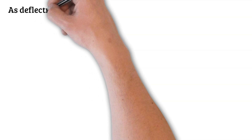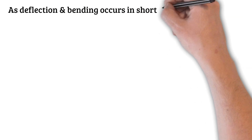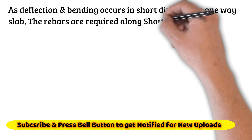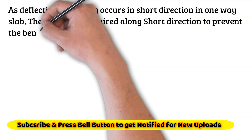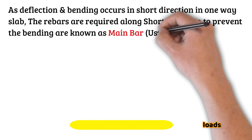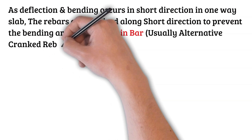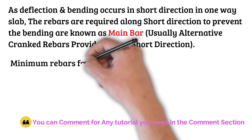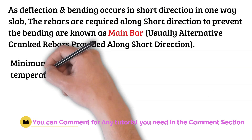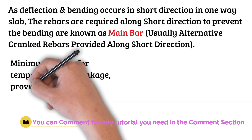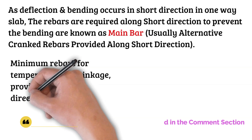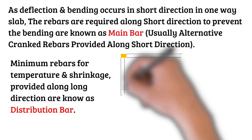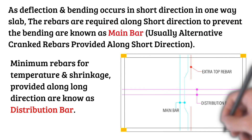As deflection and bending occur in the short direction, in a one-way slab the rebars required along the short direction to prevent bending are known as main bars. Usually, alternative cranked rebars are provided along the short direction. Minimum rebars for temperature and shrinkage provided along the long direction are known as distribution bars.